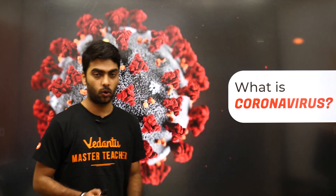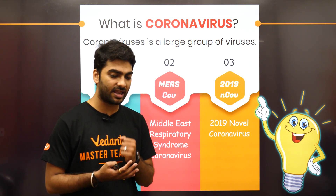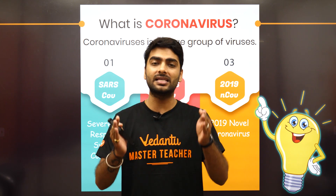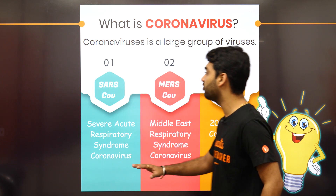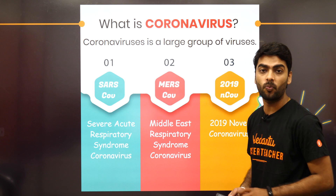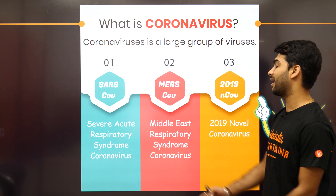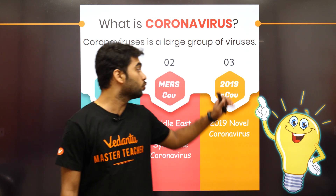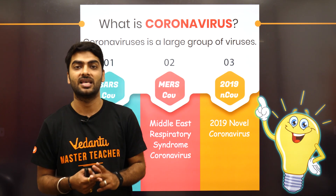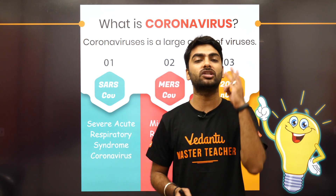What exactly is coronavirus and why the name 'corona'? Coronavirus is a group of viruses — just like mosquitoes can cause dengue, malaria, chikungunya, and zika, corona is a family of viruses. There are three different categories: SARS coronavirus (Severe Acute Respiratory Syndrome), MERS coronavirus (Middle East Respiratory Syndrome), and the 2019 Novel Coronavirus.